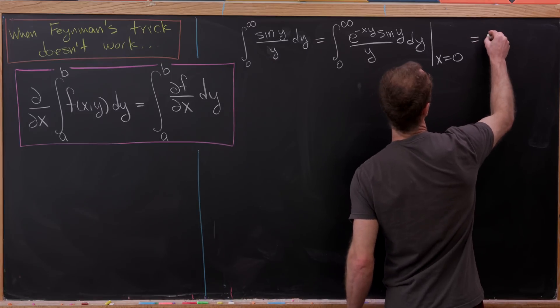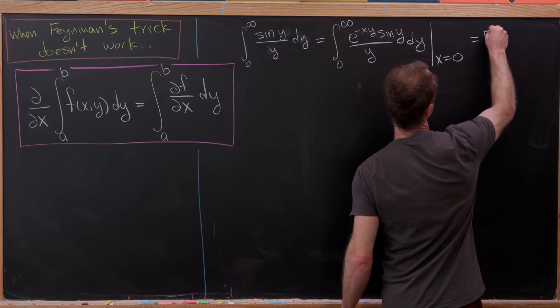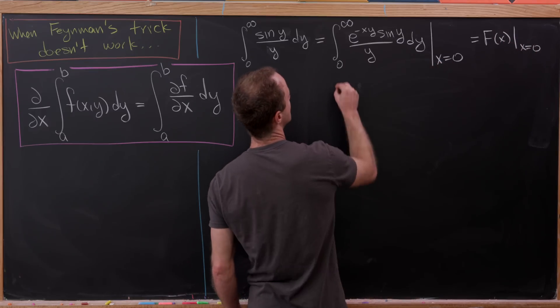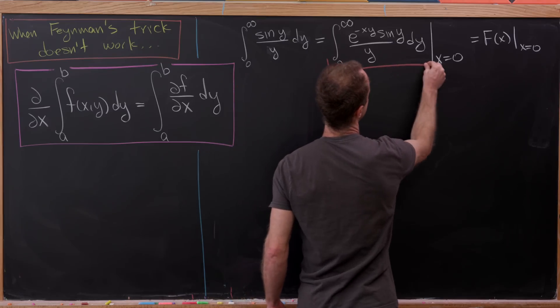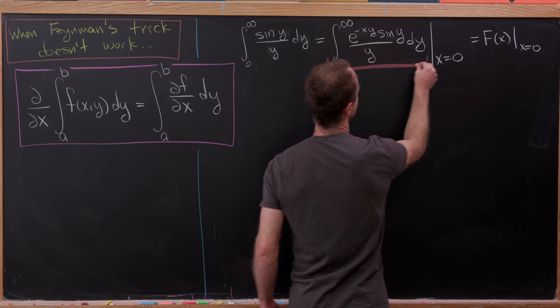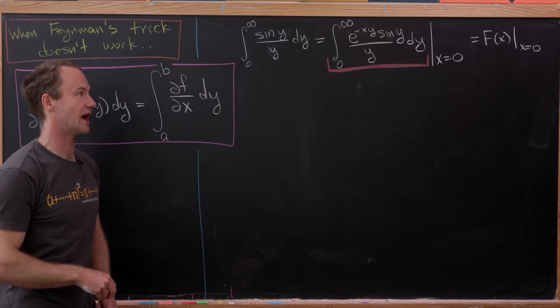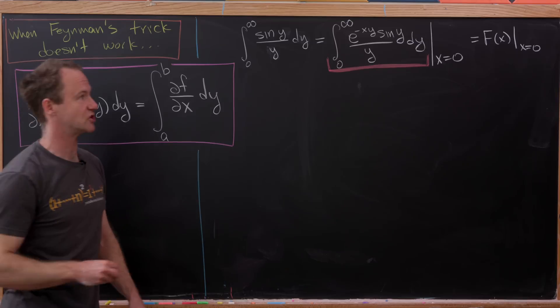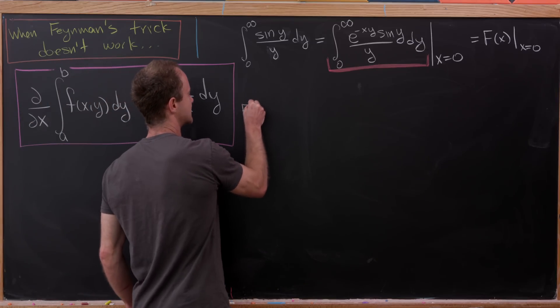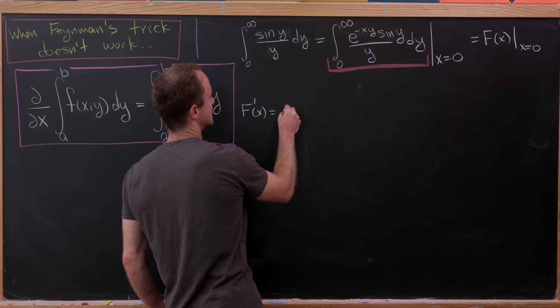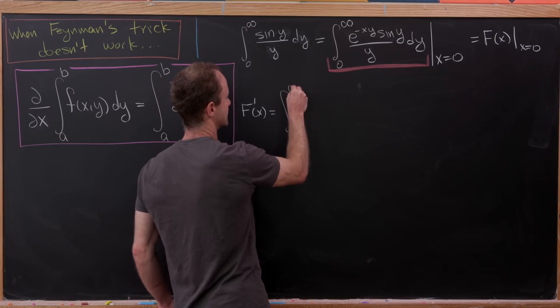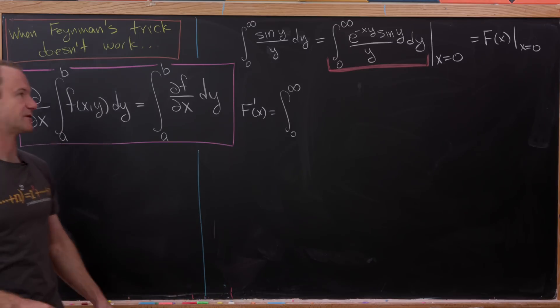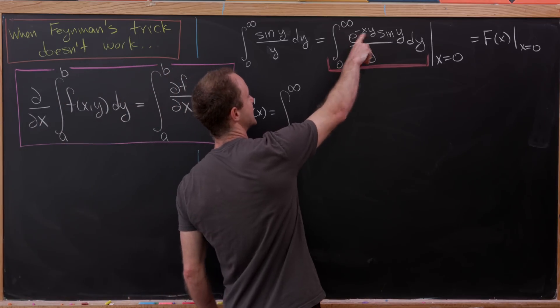Now let's call this function capital F of x evaluated at x equals zero. So what we really have is this integral without the evaluation at x equals zero is a function of x. Now we want to form some sort of differential equation for this new function. So let's look at f prime of x, and we're assuming that we can exchange the order of integration and differentiation.